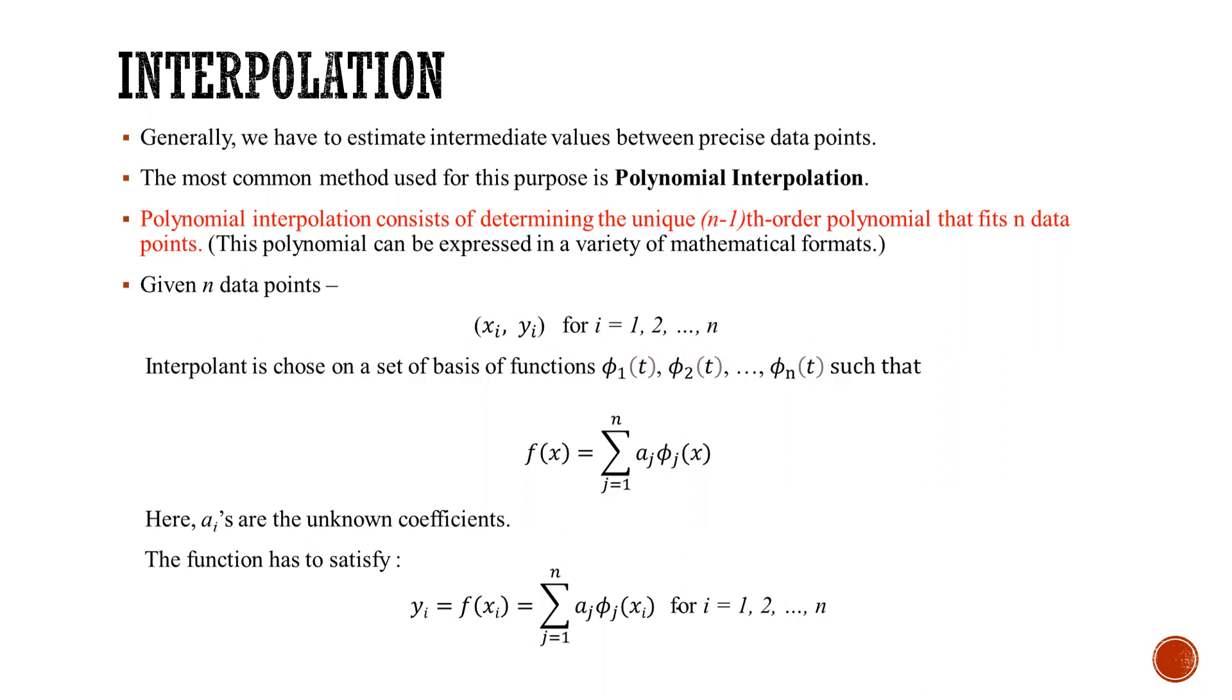Here, the unknowns are ai's. We need to find the ai's to successfully complete the polynomial interpolation.